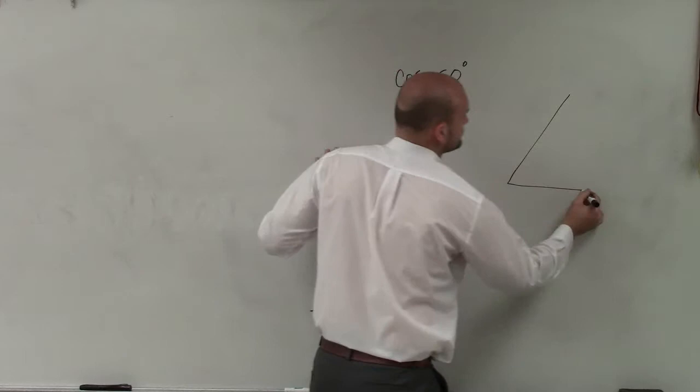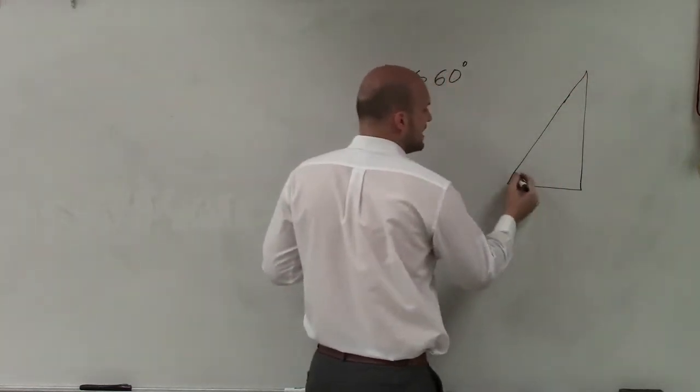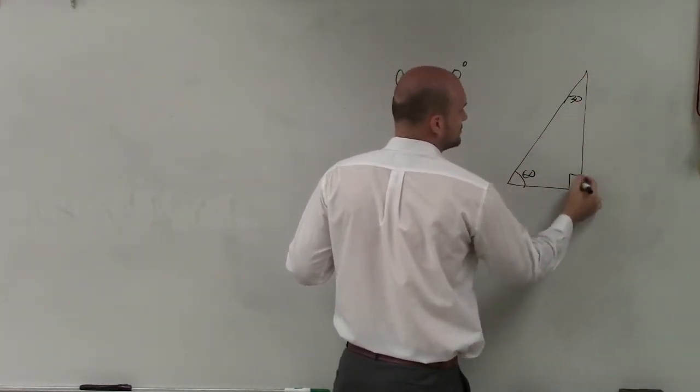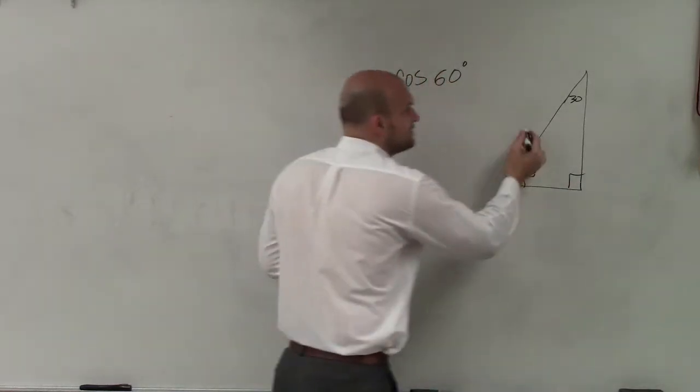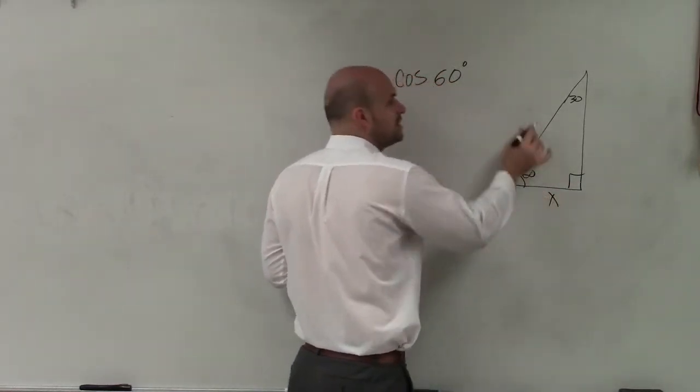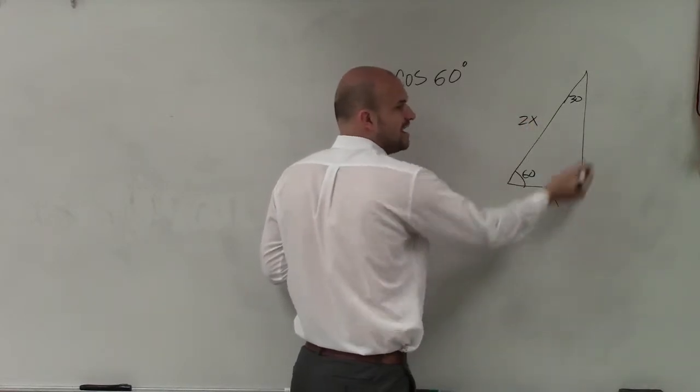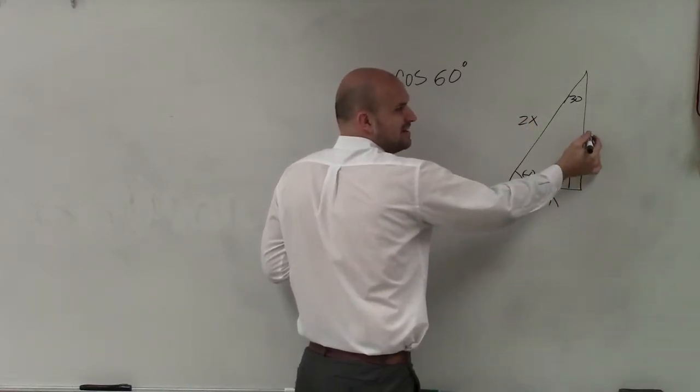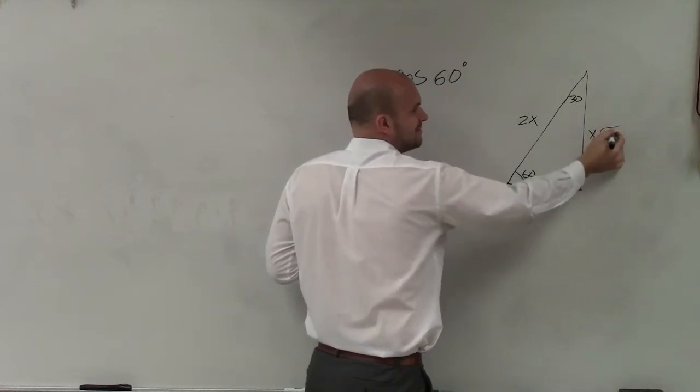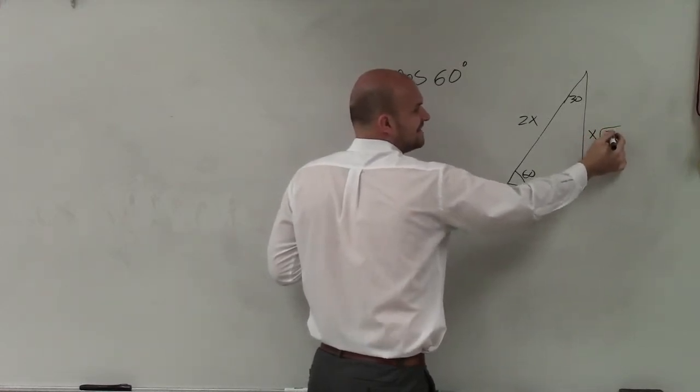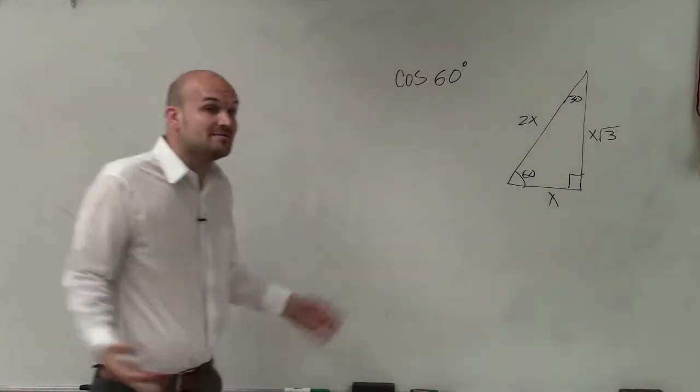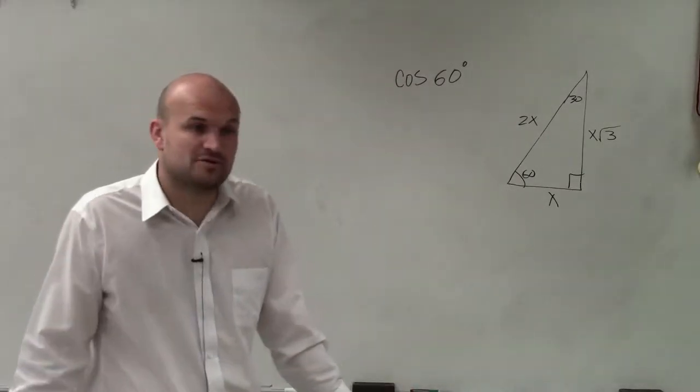We know that on a 30, 60, 90 triangle, hopefully you guys remember, if this was x, then we call this 2x. And this was, does anybody remember? x times what? Thank you. That was the ratios of your special right triangle.